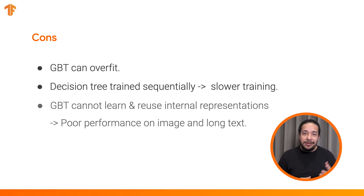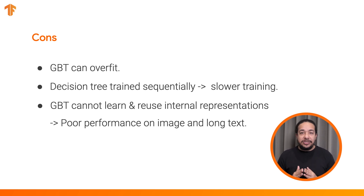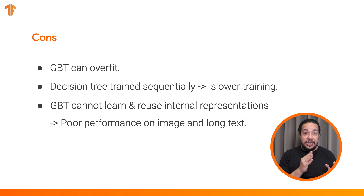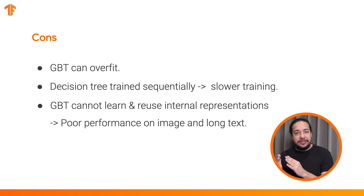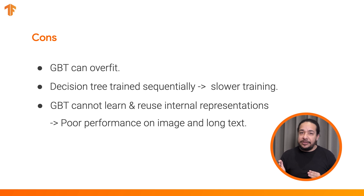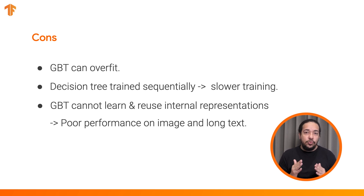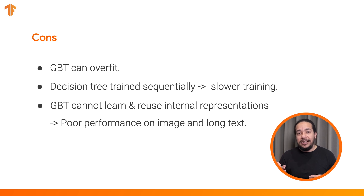3. Like random forests, gradient-boosted trees cannot learn and reuse internal representations. Each decision tree and each branch of each decision tree must relearn the dataset patterns. This usually leads to worse results on datasets with unstructured data, like images and text.